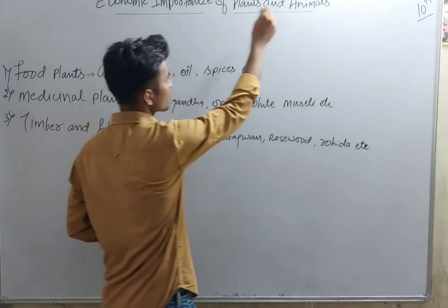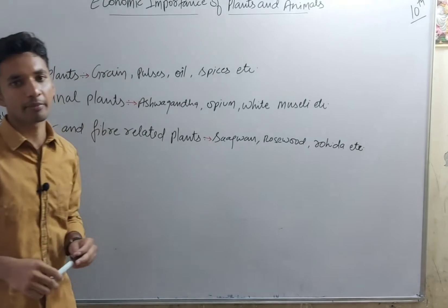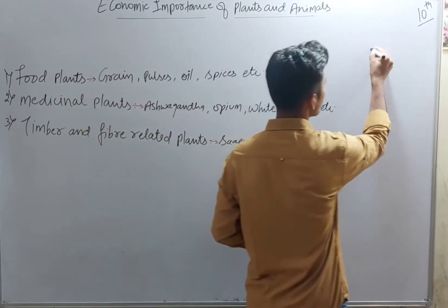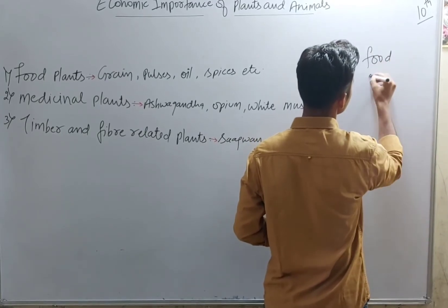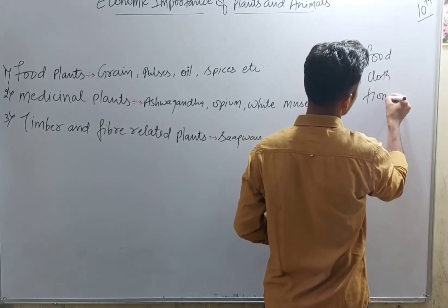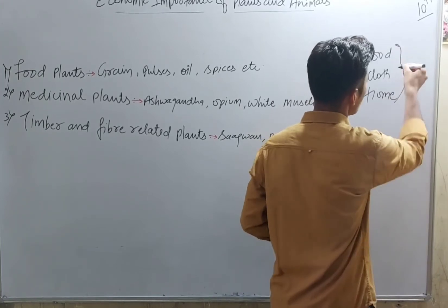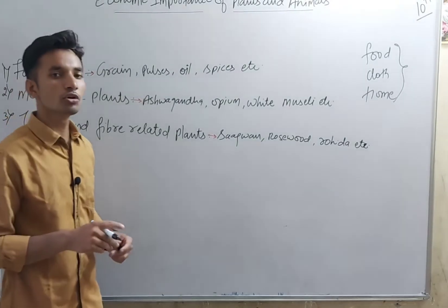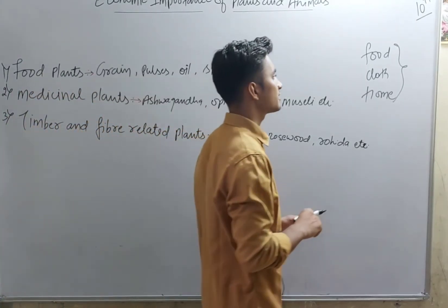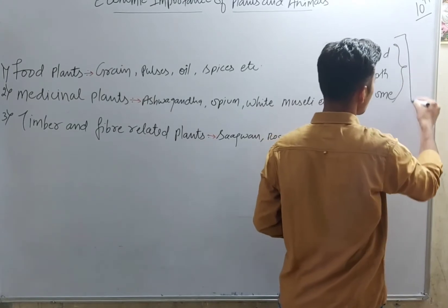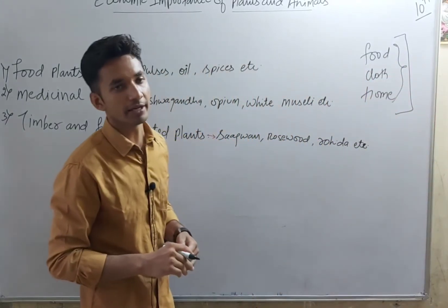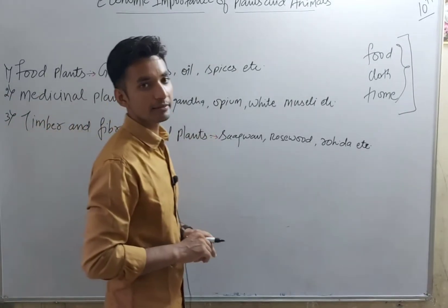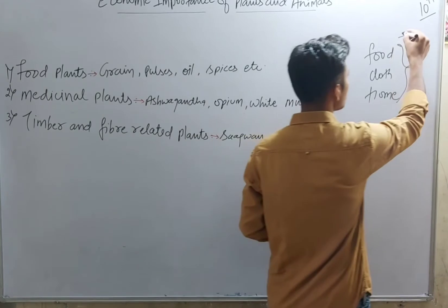Our whole life depends on plants. Our basic needs are food, clothes, and home — roti, kapda and makaan. These are the three basic needs of human life, and these three components all depend on plants.